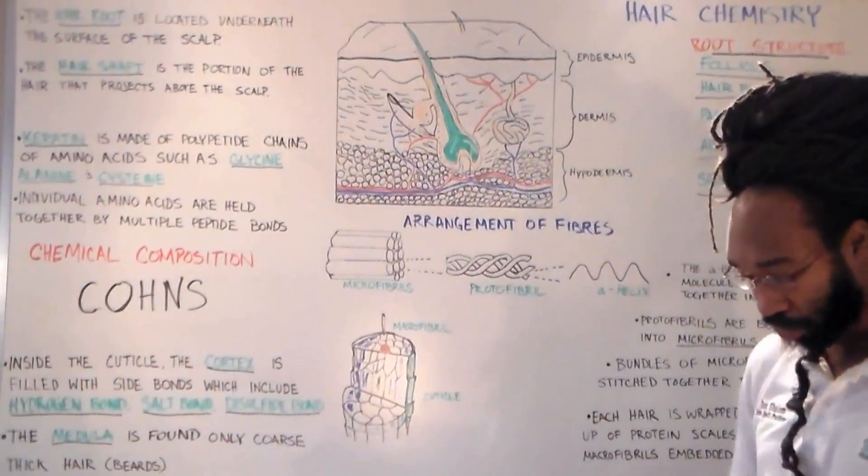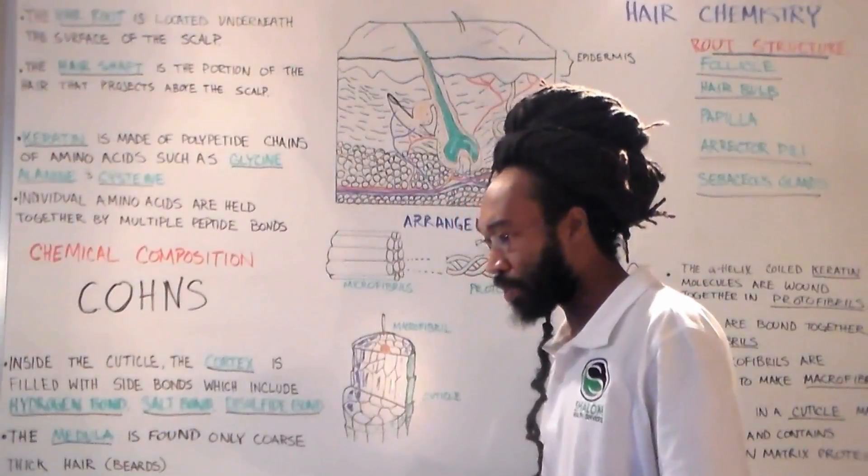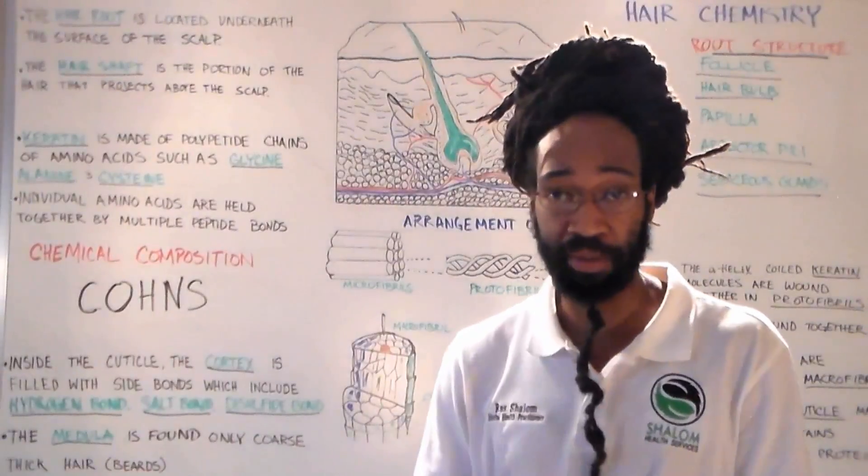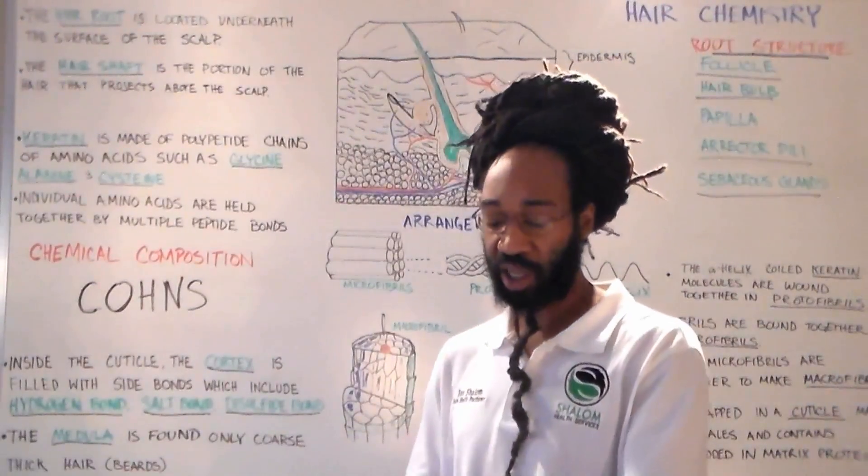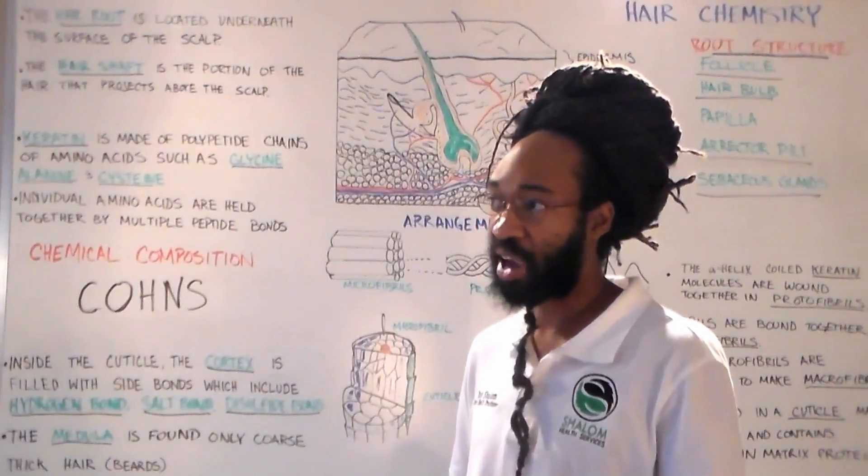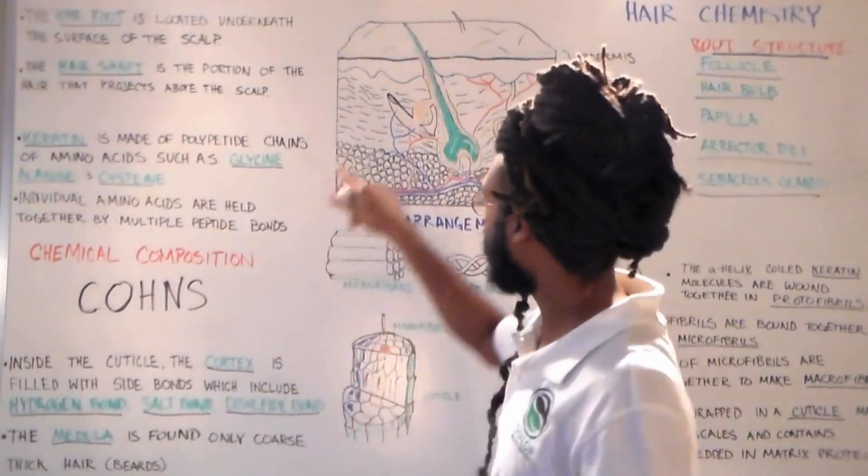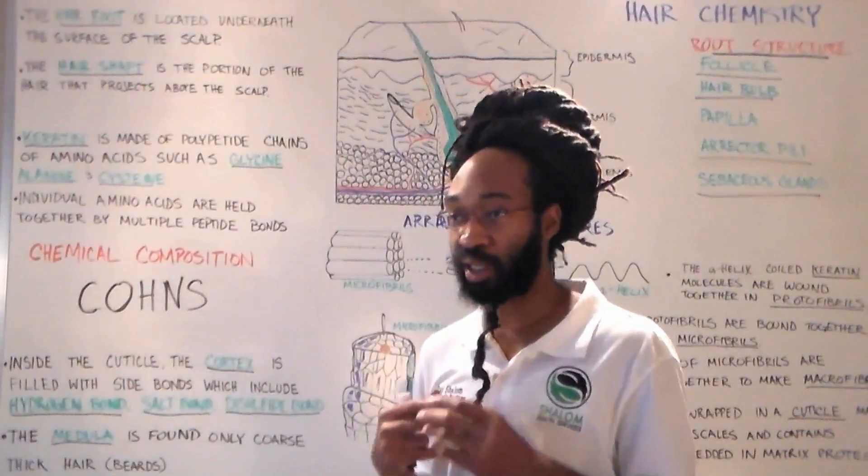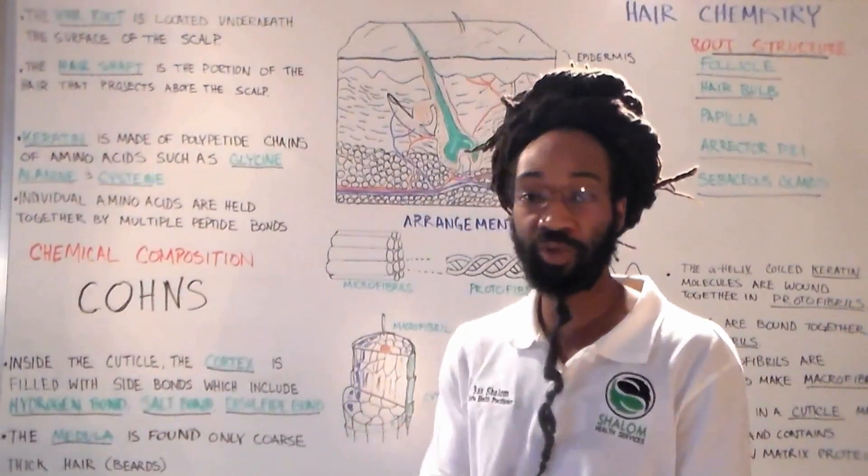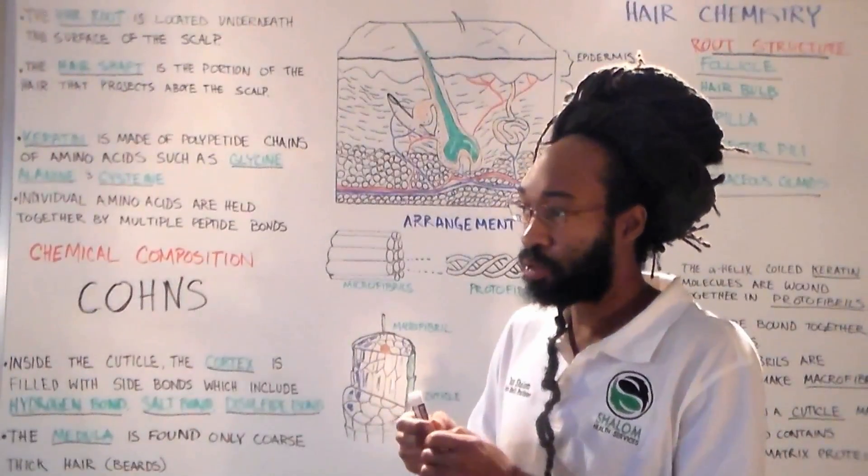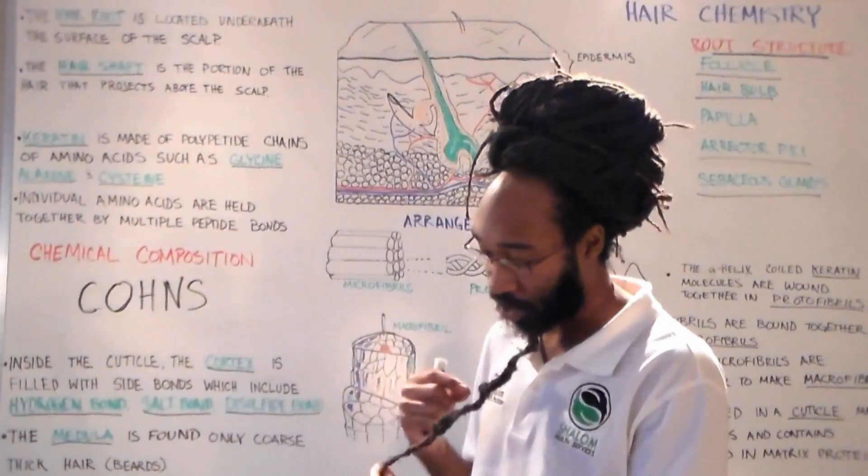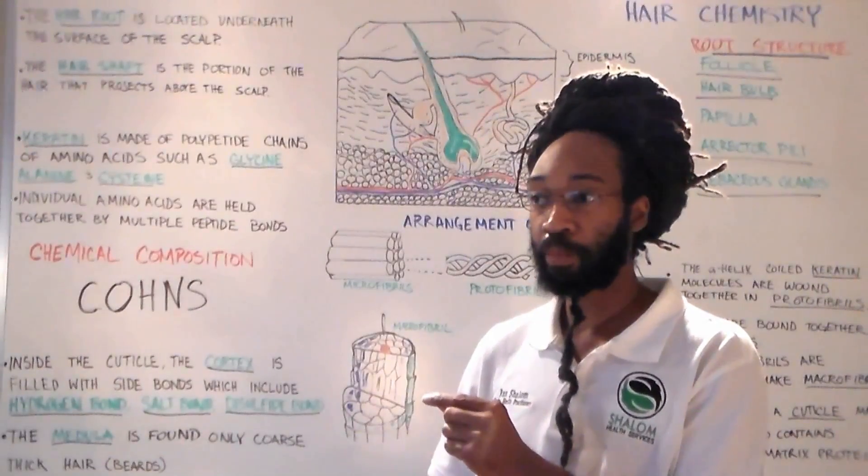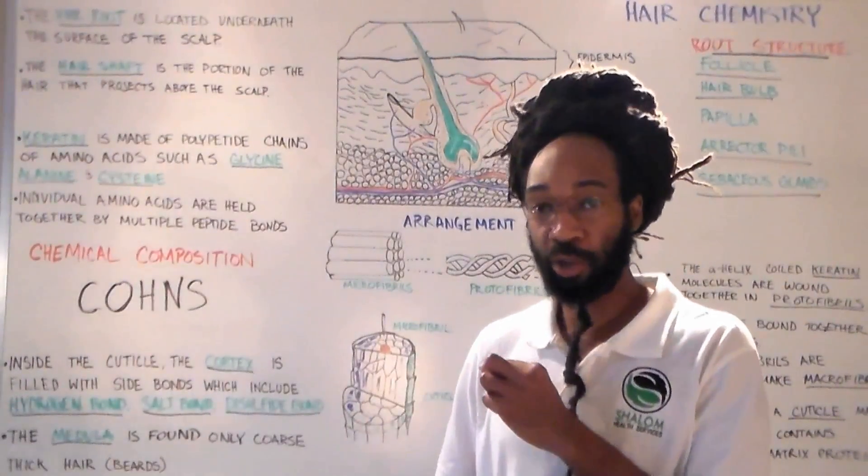Next to the erector pili muscle we have the sebaceous gland. The sebaceous gland is the gland that secretes this oily substance called sebum. Sebum is what moisturizes our skin. We can see that the hair actually is lubricated when it comes out. This is all the sebum area right here that lubricates this hair follicle that gives it its luxurious silkiness, smoothness that it has.